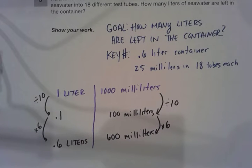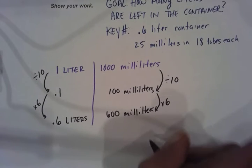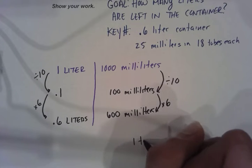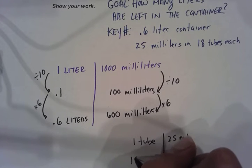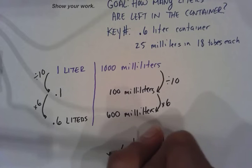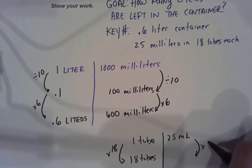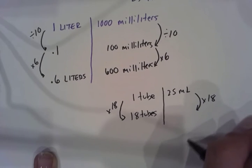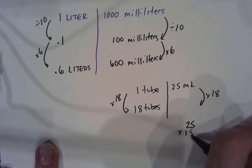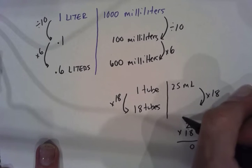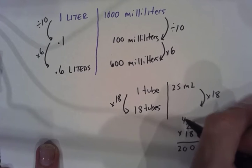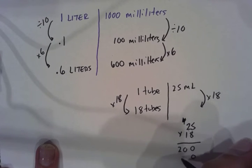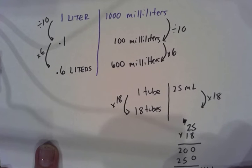Now let's figure out how many milliliters were poured into those 18 test tubes. If one tube is 25 milliliters and we have 18 tubes, I know 1 times 18 equals 18, and what you do to one side you do to the other. So 25 times 18: 8 times 5 is 40, put the 0, carry the 4. 8 times 2 is 16 plus 4 is 20. Then multiply by 1, giving us 450 milliliters.